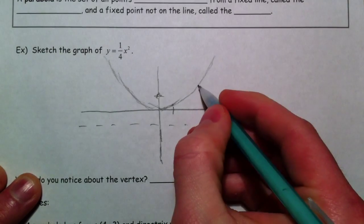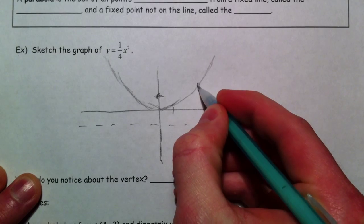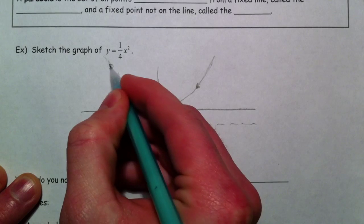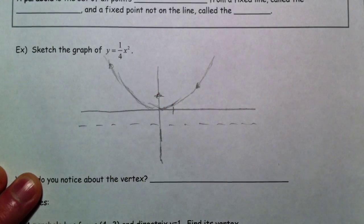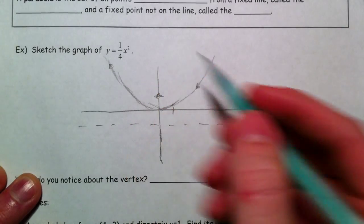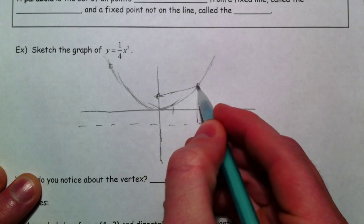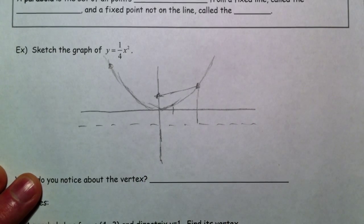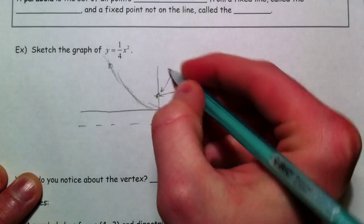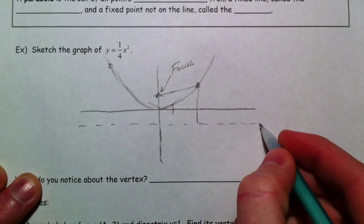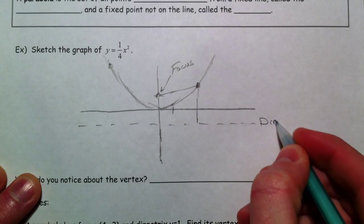The geometric definition is that any point on the graph, this point or this point, every point on the parabola are the same distance from this directrix as they are from a point called the focus.